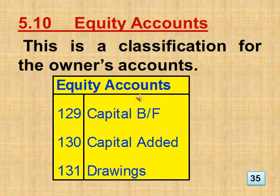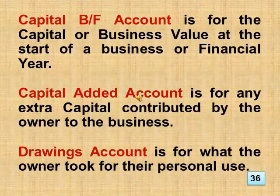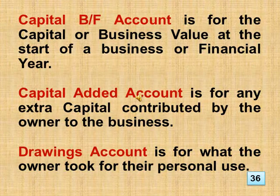Section 5.10 Equity Accounts. This is a classification for the owner's accounts. This includes: Capital Brought Forward, Capital Added, and Drawings. Capital Brought Forward account is for the capital or business value at the start of a business or financial year. Capital Added account is for any extra capital contributed by the owner to the business. Drawings account is for what the owner took for their personal use.